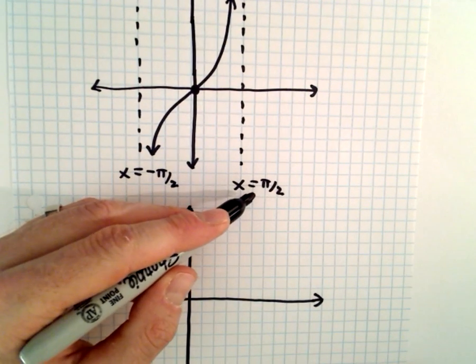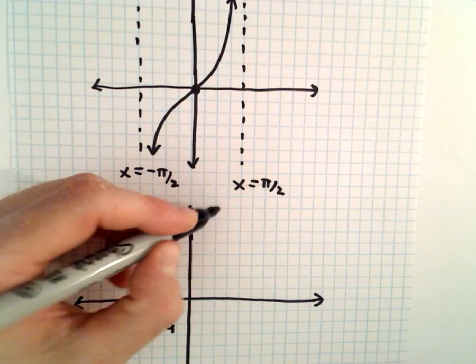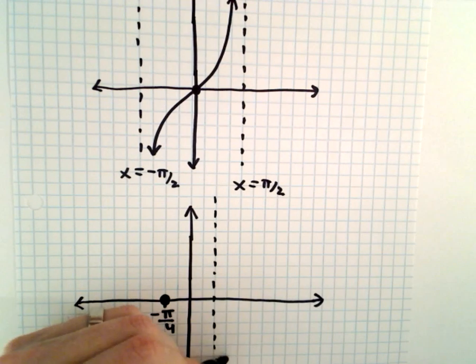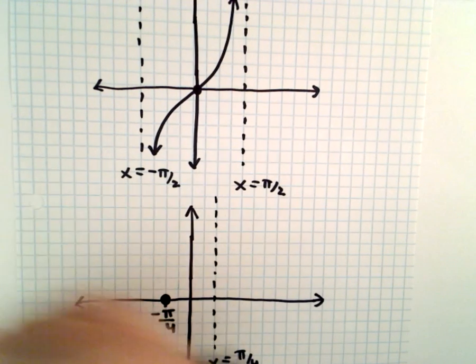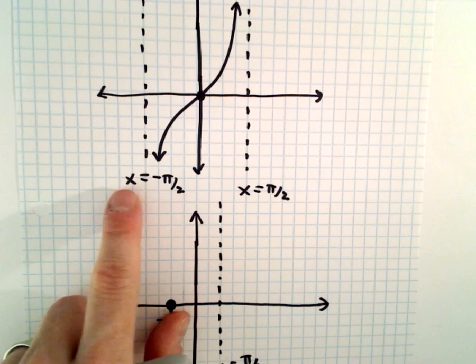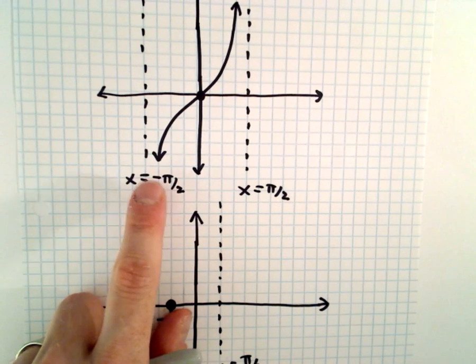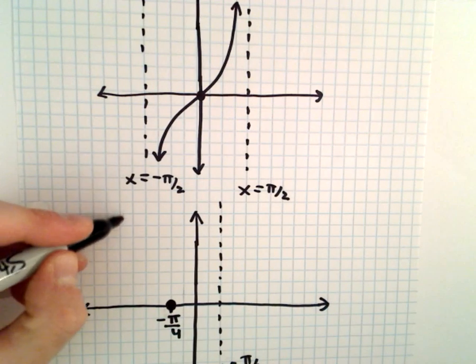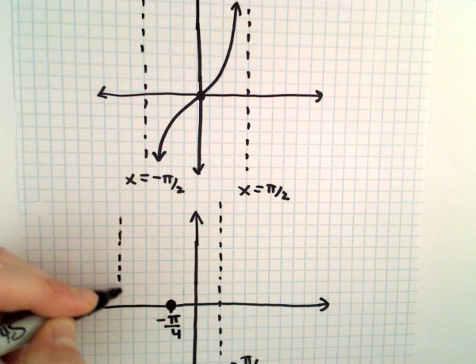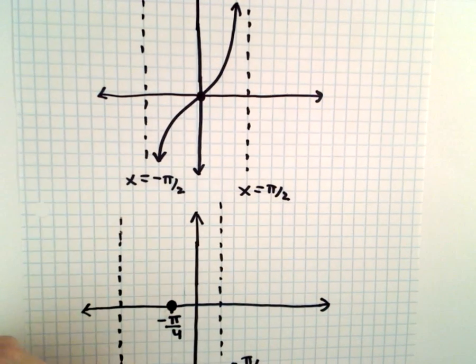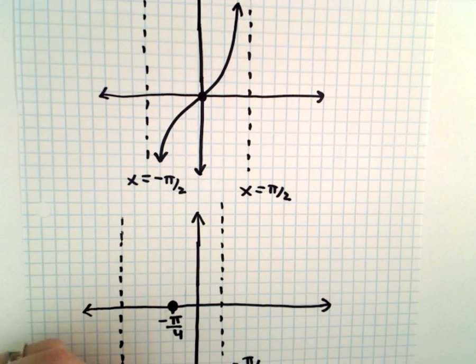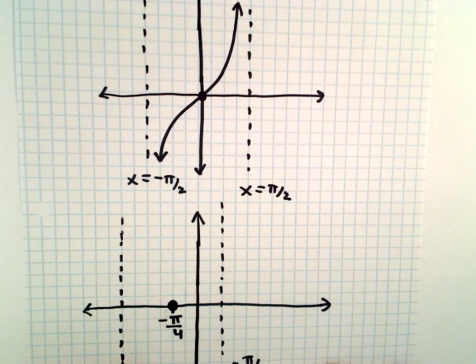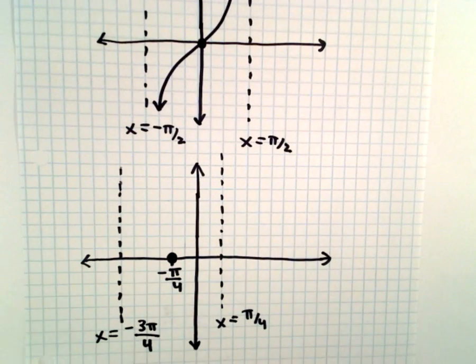Instead of our vertical asymptote being at x equals pi over 2, it'll be at x equals pi over 4, and likewise instead of our other vertical asymptote being at x equals negative pi over 2, it'll now be at negative 3 pi over 4. So a half minus a fourth would give you negative 3 fourths, and again just keeping the pi's in there.